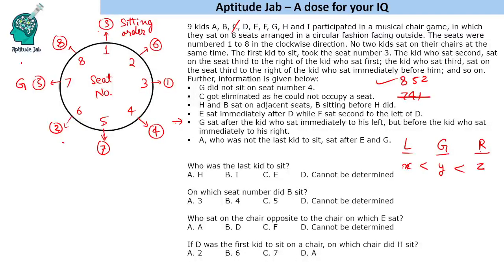Now let us arrange the remaining people using the other statements. A sat after E and G, and A is not the last kid to sit. G is the 5th person to sit, so A has to be either the 6th or 7th person.